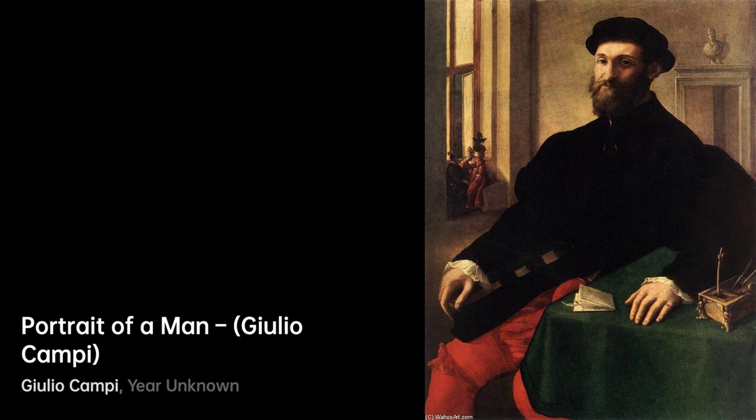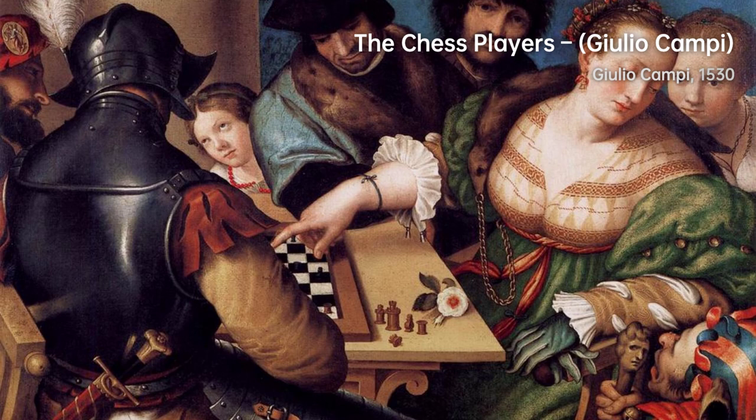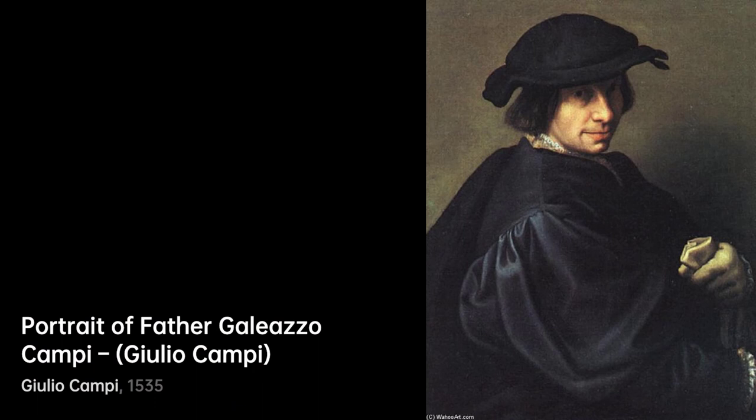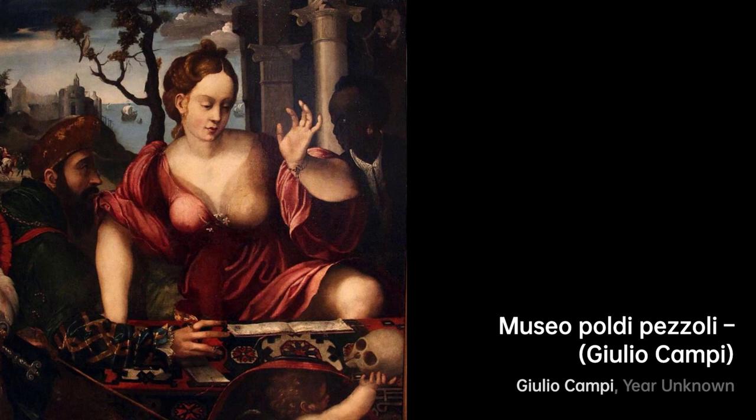Many of his frescoes can be found in churches throughout Cremona, Mantua, and Milan. Campi's influence on the Renaissance in Cremona earned him the nickname the Ludovico Caracci of Cremona. His painting The Chess Game and Descent from the Cross in San Sigismondo showcase his lofty style and broad handling of the medium. While he was involved in the reconstruction and decoration of Santa Rita Church in Cremona, he also created frescoes in the Dome of San Girolamo in Mantua.